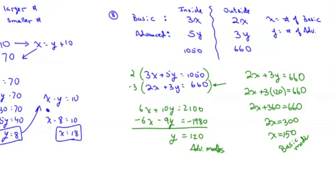So we're going to make 150 basic models and 120 advanced models. A lot of these work problems require organization — figure out what's going on, what's related, split things up like basic versus advanced, associate all the numbers, and figure out what you don't know. In this case, it was how many of each type are you making.